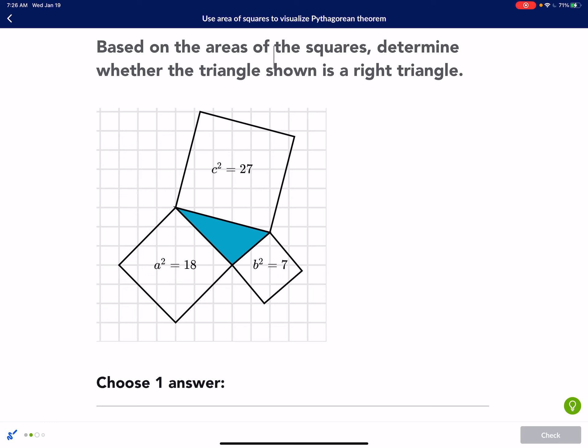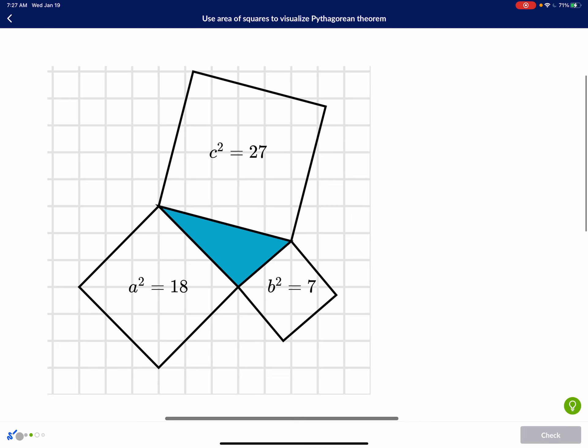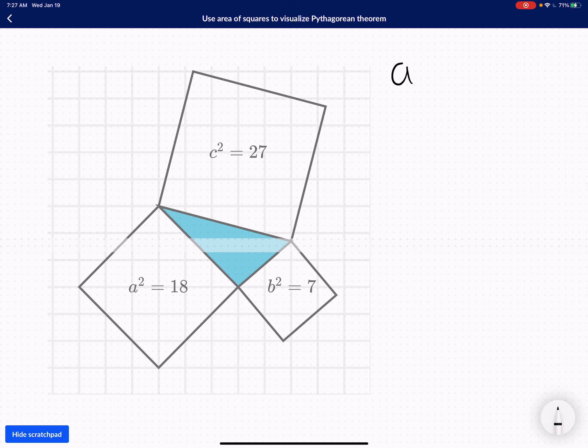Based on the areas of the squares, determine whether the triangle shown is a right triangle. So let's think, is it a right triangle? Let's make this bigger. So we know that, once again, it's A squared plus B squared equals C squared. So A squared is 18, plus B squared is 7, is equal to C squared, which is 27. 18 plus 7 is 25, is equal to 27. Does that equal to each other? Nope.